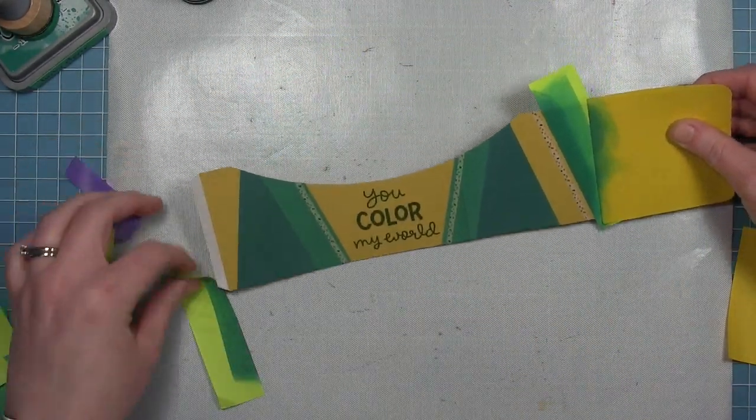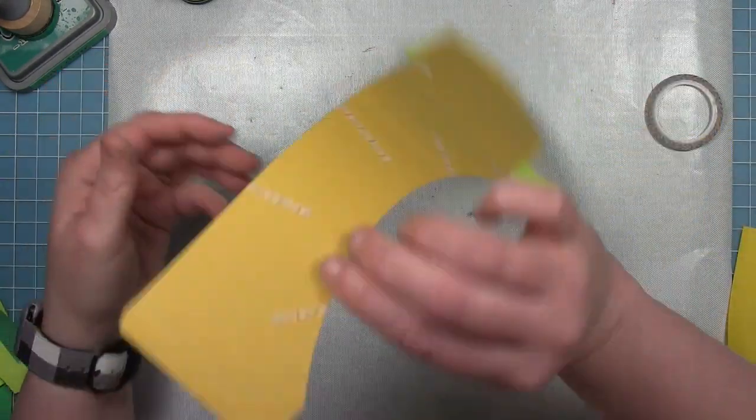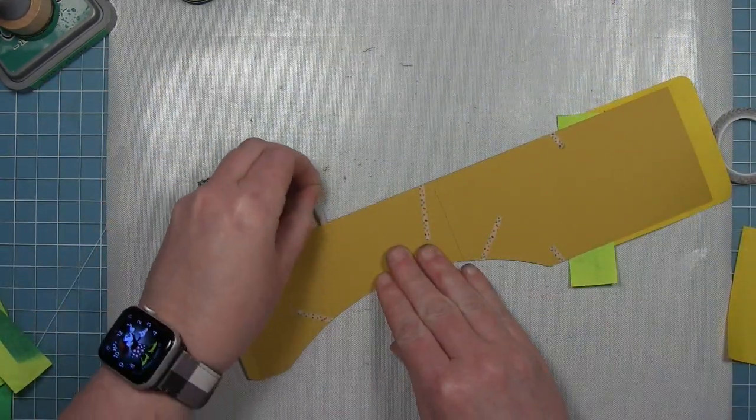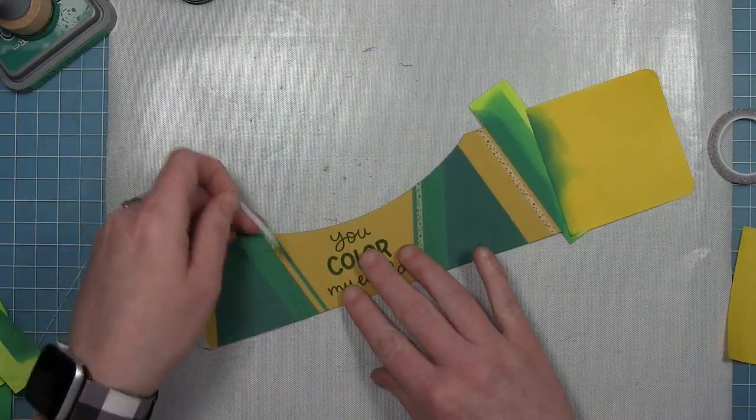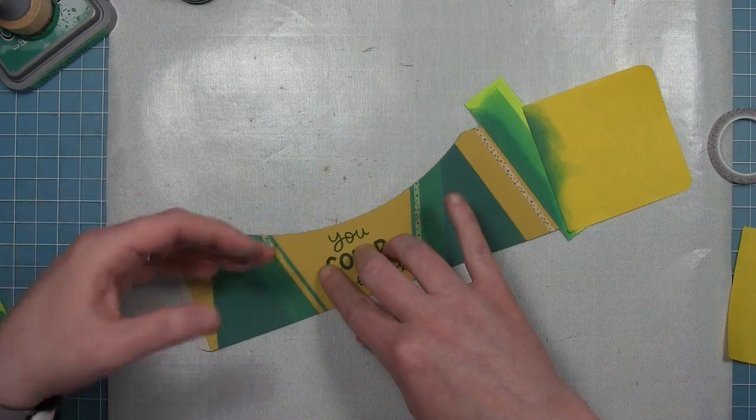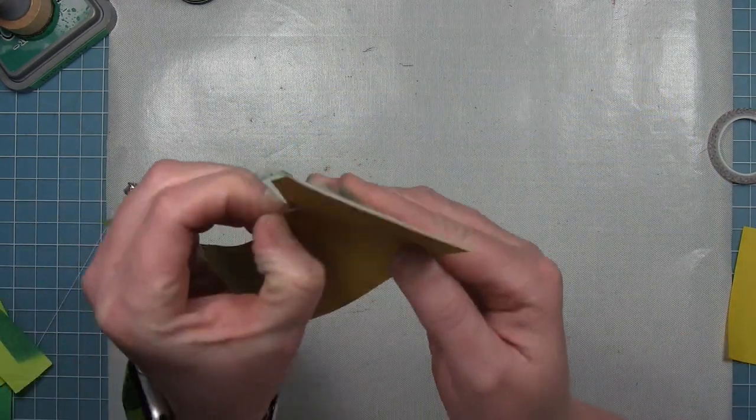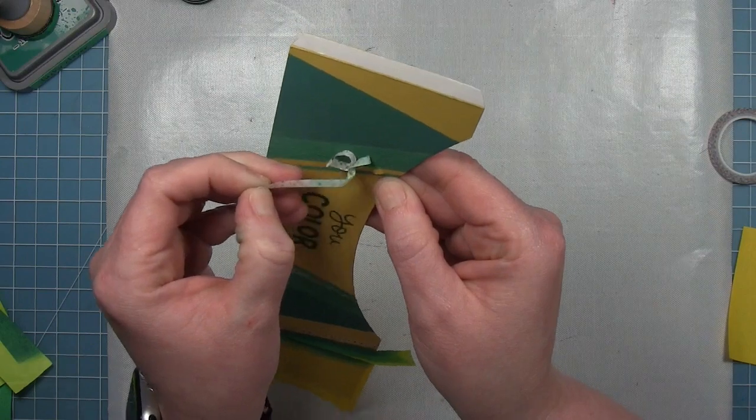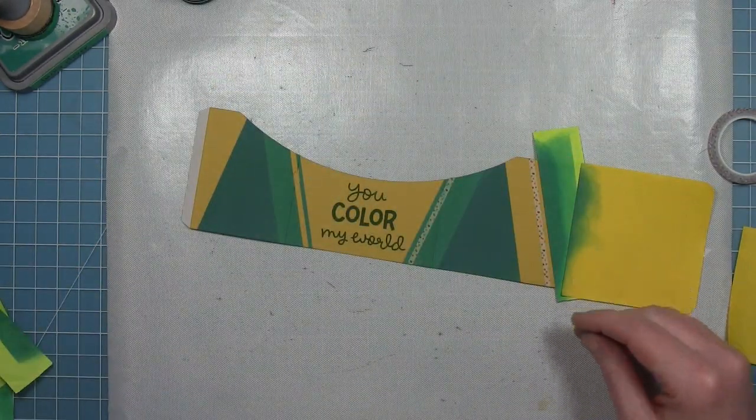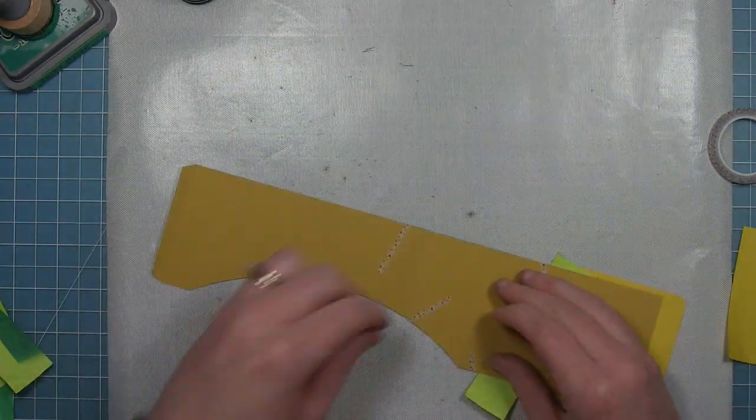And I'm just eyeballing where my thin stripe is going to be. I'm going ahead and pulling off the middle just so I can see what I'm doing. And I started to have a little bit, it's going to rip my paper here slightly, but it was an easy fix.